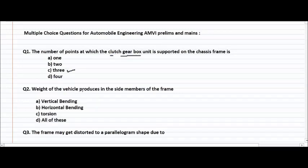Question number two: weight of the vehicle produces in the side members of the frame — which type of bending? Is it vertical bending, horizontal bending, torsion, or all of these? The right answer is vertical bending.